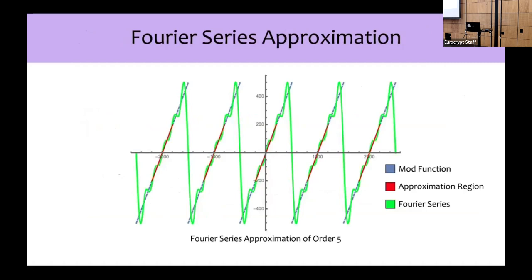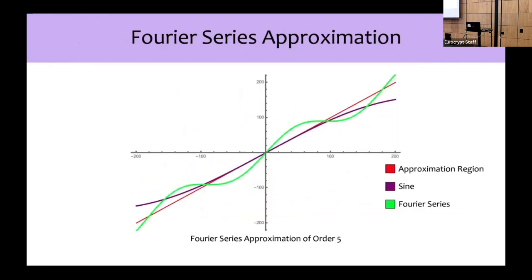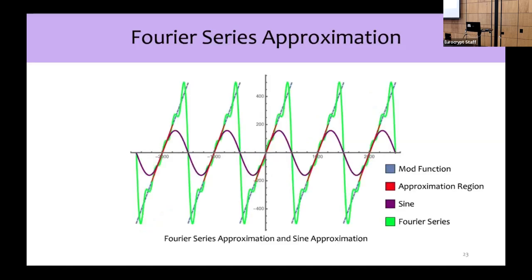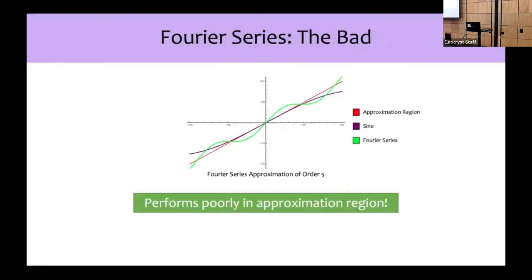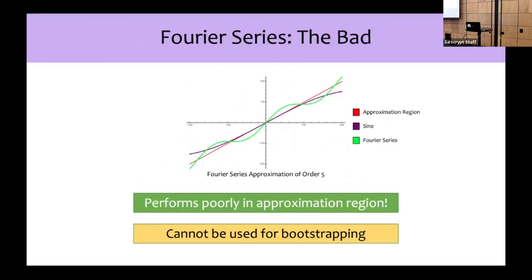Our first observation is that there's a well-known technique to approximate periodic functions called the Fourier series. However, if you zoom in on the red approximation region we care about, the Fourier series performs quite poorly — in fact, even worse than sine at approximating the mod function in that region. The reason is that the Fourier series is attempting to approximate the mod function everywhere, instead of only focusing on the red approximation region. Thus, the Fourier series cannot be used for bootstrapping.